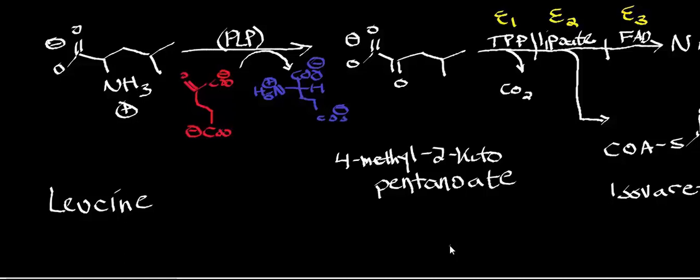When we catabolized valine, we ultimately got it down to propionyl-CoA, and we ended up converting that to succinyl-CoA. What we're going to find out in this video is we're actually going to catabolize leucine down to HMG-CoA. If that molecule doesn't sound familiar, certainly go back and watch the ketone body biosynthesis and ketone body catabolism playlist, or if you've seen cholesterol biosynthesis, you might know what HMG-CoA is.